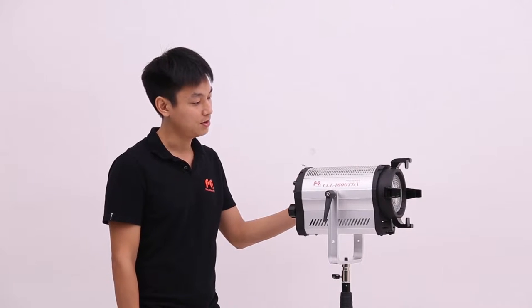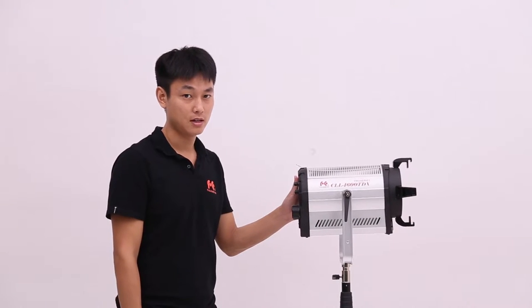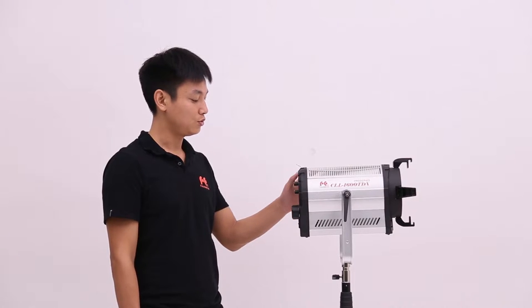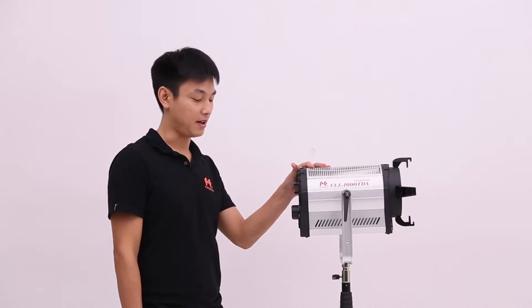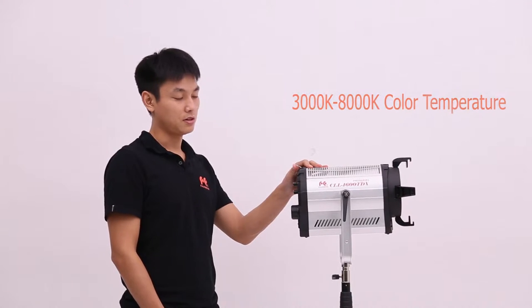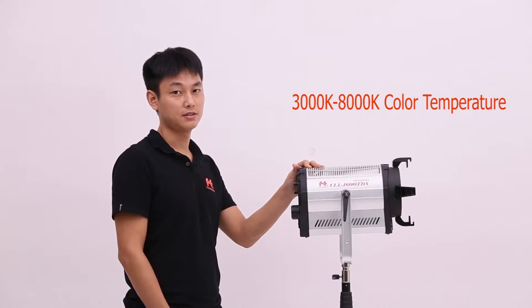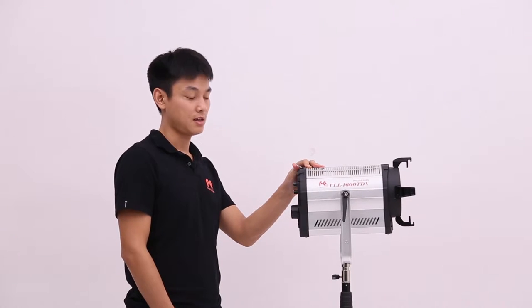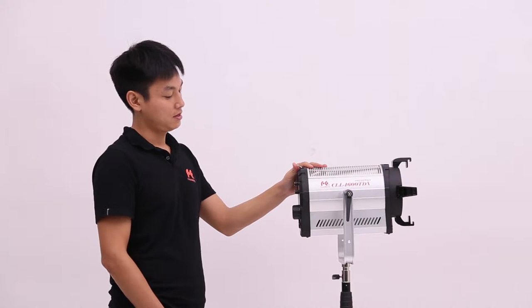Hello everyone, today I'm going to introduce the CLL-1600TDX light. This light has adjustable color temperature that can be controlled via DMX console or touchscreen, with color temperature ranging from 3000-8000K and brightness adjustable from 0-100%.